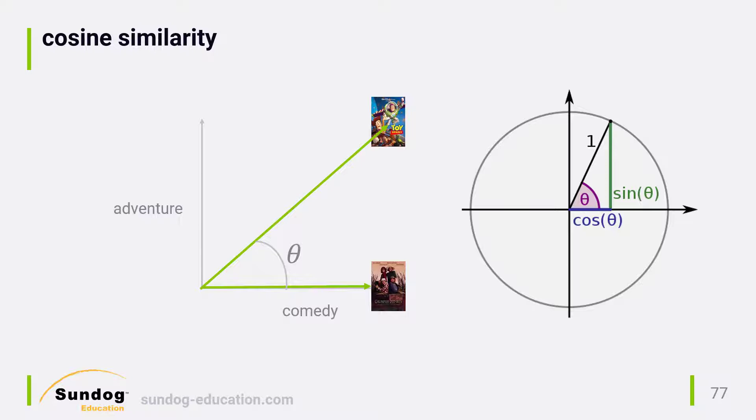Let's look at a couple more examples. Imagine we throw Monty Python and the Holy Grail into the mix, which, like Toy Story, is both an adventure and a comedy. The angle between it and Grumpy Old Men is 45 degrees, just like Toy Story, so its similarity score to Grumpy Old Men is the cosine of 45 degrees, or 0.7. But what is its similarity to Toy Story? Well, it's quiz time. What's the angle theta between the vectors for Toy Story and Monty Python and the Holy Grail?